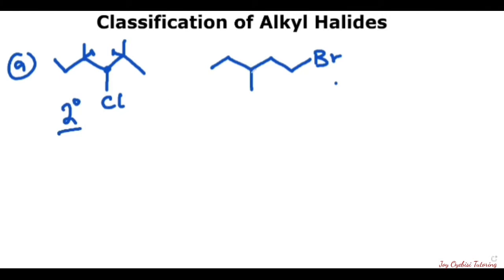Here you have this as the carbon of interest — it's the one bearing the bromine, which is a halogen. This is directly connected to just one carbon and nothing else. So since it's connected to just one carbon, this is the primary alkyl halide.